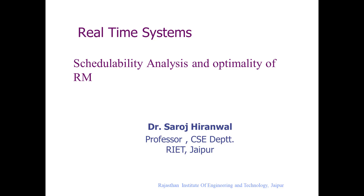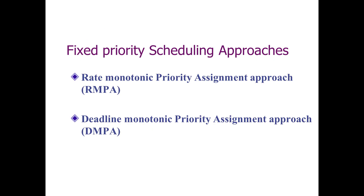Good morning students. Today we'll discuss the schedulability analysis and optimality of the rate monotonic algorithm. In the last slide we discussed the temporal parameters and definitions of the periodic task model. The four-tuple model associated with rate monotonic includes phase, execution time, period, and deadline. Rate monotonic also falls under the fixed priority scheduling approach; there are two approaches: RMA and deadline monotonic.